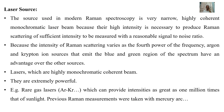The source used in modern Raman spectroscopy is a very narrow, highly coherent, monochromatic laser beam, because high intensity is necessary to produce Raman scattering of sufficient intensity to be measured with a reasonable signal-to-noise ratio. Because the intensity of Raman scattering varies as the fourth power of the frequency, argon and krypton ion sources that emit in the blue and green region of the spectrum have an advantage over other sources. Lasers are highly monochromatic coherent beams that are extremely powerful — for example, rare gas lasers such as argon and krypton can provide intensities as great as 1 million times that of sunlight. Previously, Raman measurements were taken with mercury arc sources.